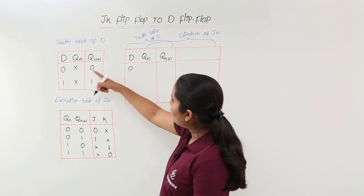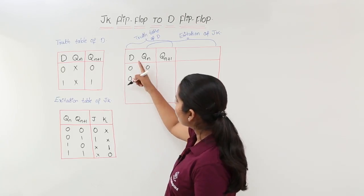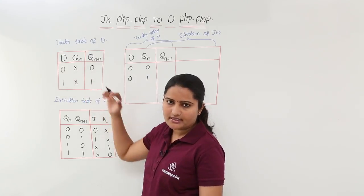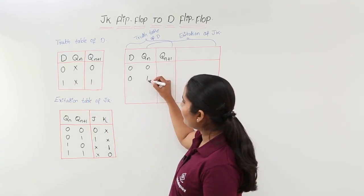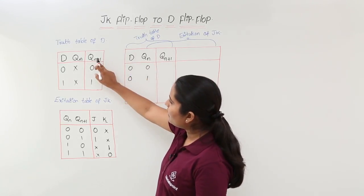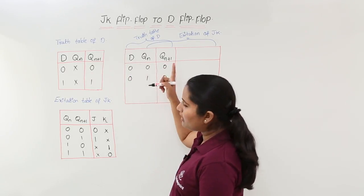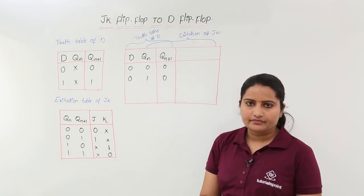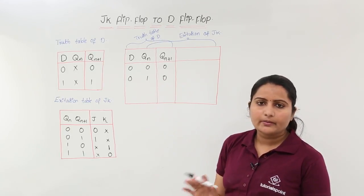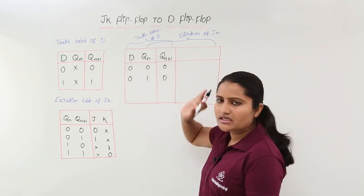In the case D = 0, Q(n) may be either 0 or 1, giving two cases. Whatever Q(n) is, Q(n+1) = 0. The D flip-flop output always depends only on D input, not on the present state — whatever input we provide, we get it at the output.